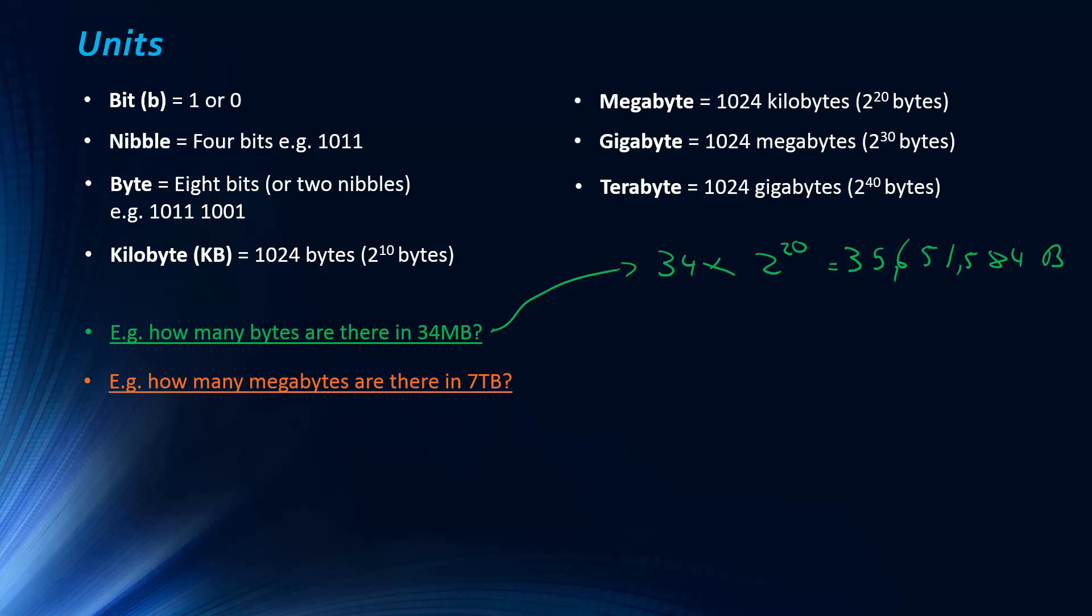A slightly harder one, it'll probably only be a one-mark in your exam: how many megabytes are there in 7 terabytes? What I would always say is always convert back to the lowest unit. File storage is done in terms of bytes, so I want to convert both megabyte and terabyte to bytes. 7 terabyte is going to be 7 times 2 to the 40 in bytes, and we want, I'm going to use the letter M to denote megabytes.